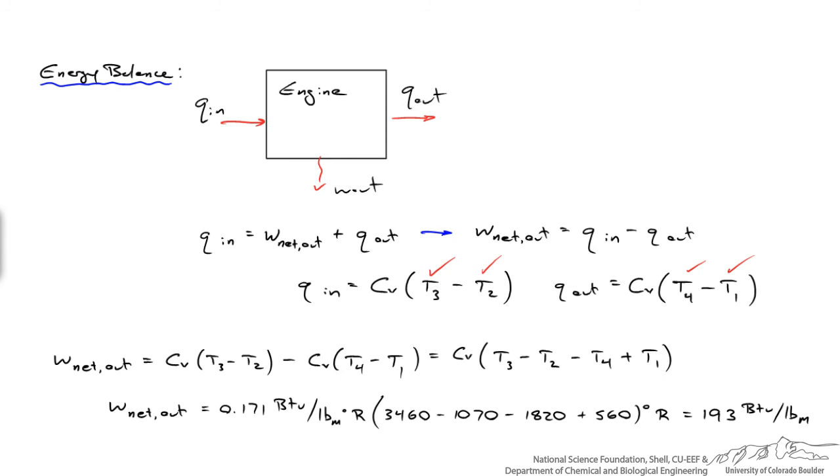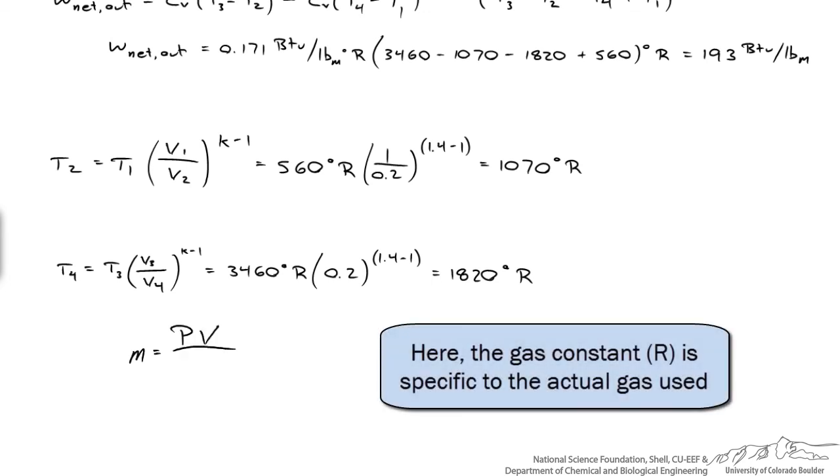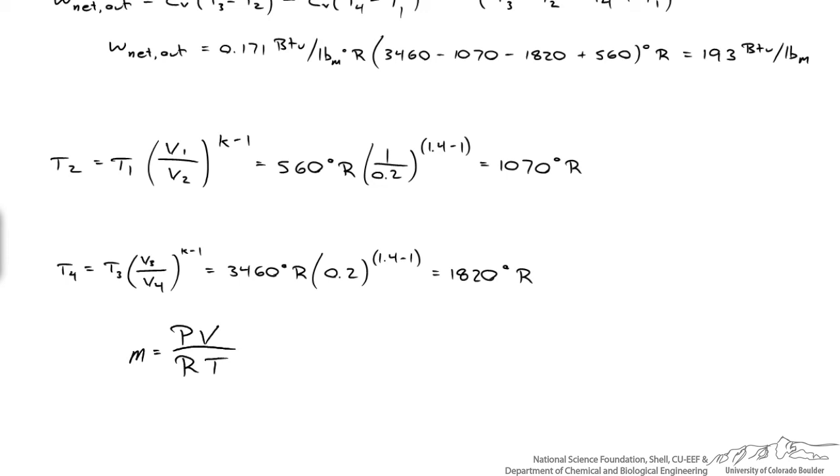What we really want is the total amount of power that this engine is generating, so we want the power in horsepower. So one thing we need to figure out is the mass of gas within the engine itself, and we need to know the rate at which power cycles are being generated. So if we take the rate at which power cycles are occurring, and we know the mass within there, we can figure out the actual power of the engine in horsepower.